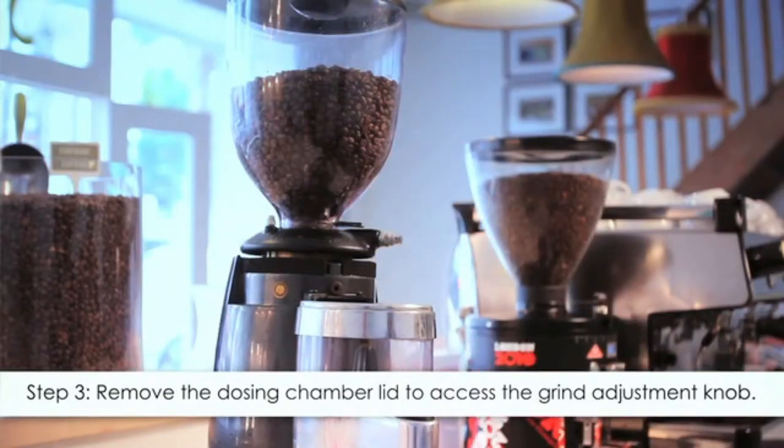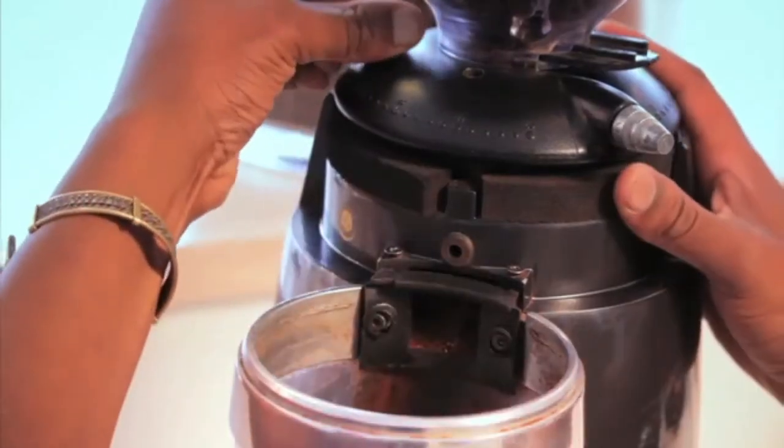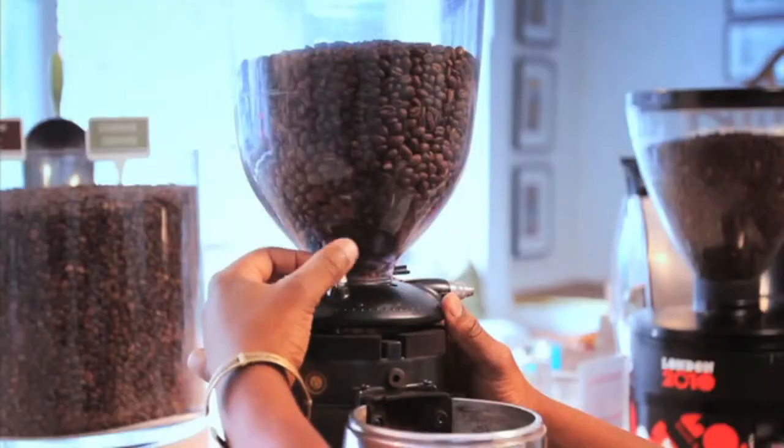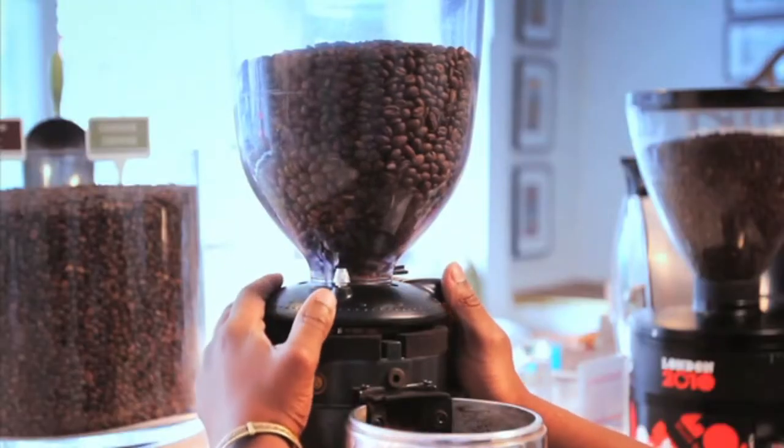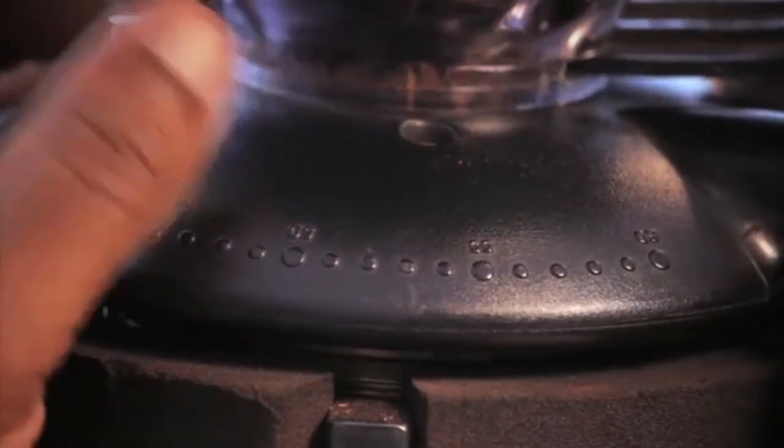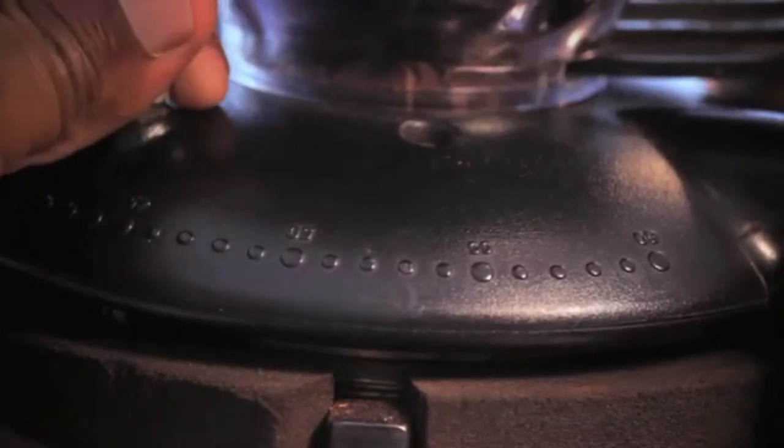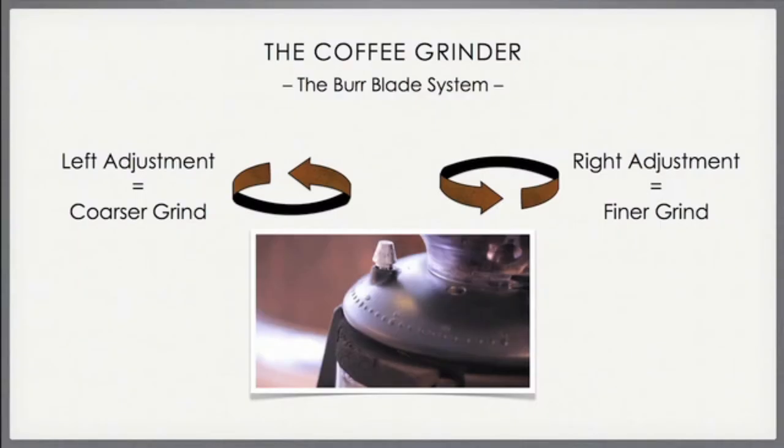To adjust the grind, loosen the knob and move it slightly to the right for a finer adjustment or slightly to the left for a coarser adjustment. Tighten the adjustment knob once the required grind is achieved. This relates to each specific grinder, so you need to find the exact spot on your grinder.